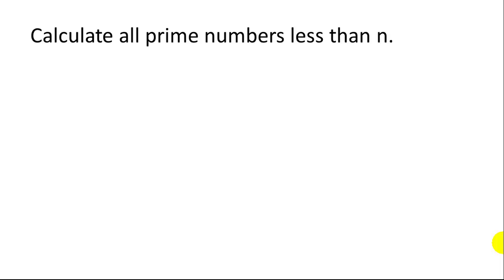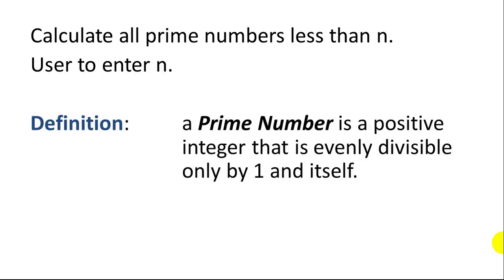Let's say we want to calculate all the prime numbers less than some number n. So the user will enter this number n. And let's start with the definition, what is a prime number? A prime number is a positive integer that is evenly divisible by only one and itself.